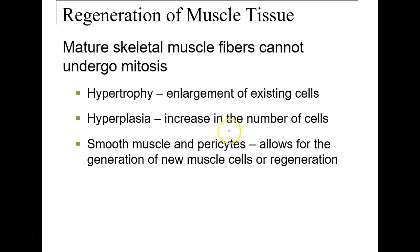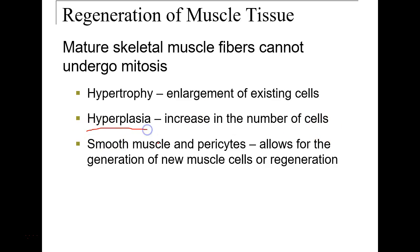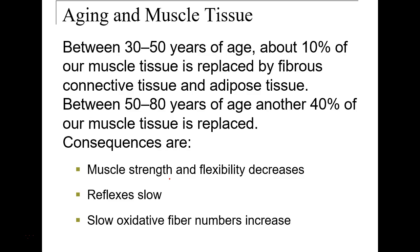Clinical notes on regeneration: hypertrophy is the enlargement of existing muscle cells; hyperplasia is actually increasing the number of muscle cells, which is not a commonly normal situation for skeletal muscle. Smooth muscle, however, is able to regenerate and create new muscle cells.